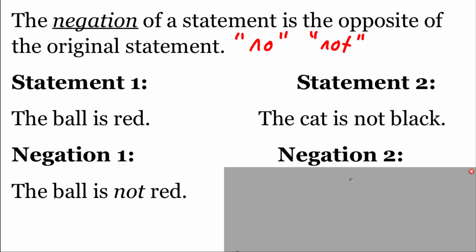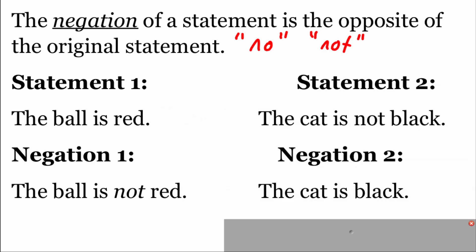If we look at our next statement, it says 'The cat is not black.' Well, this one already has a 'not' in it. So if we're going to negate that one, we would just take it out in order to get the opposite. Its negation would say 'The cat is black.'